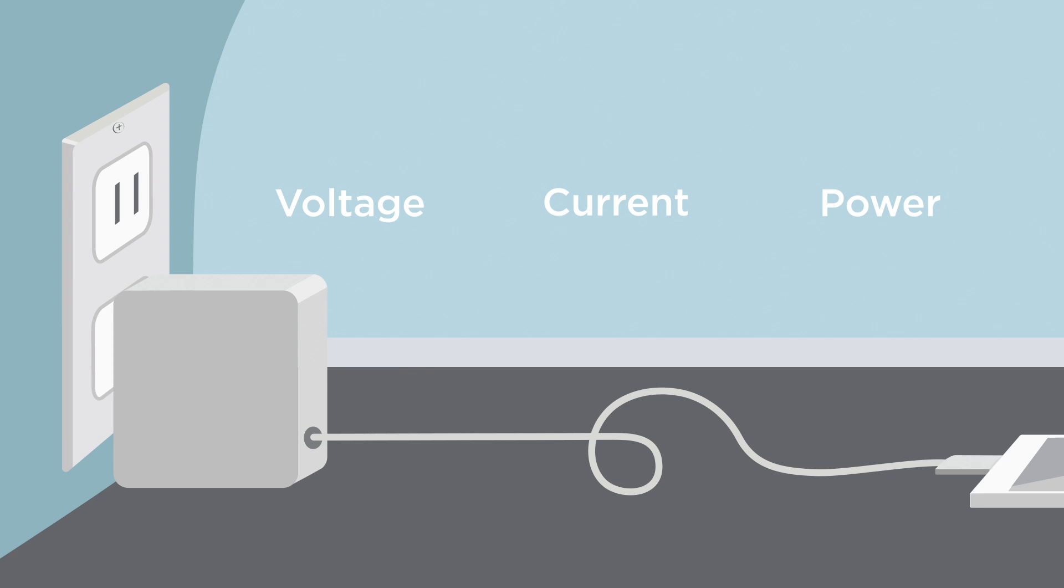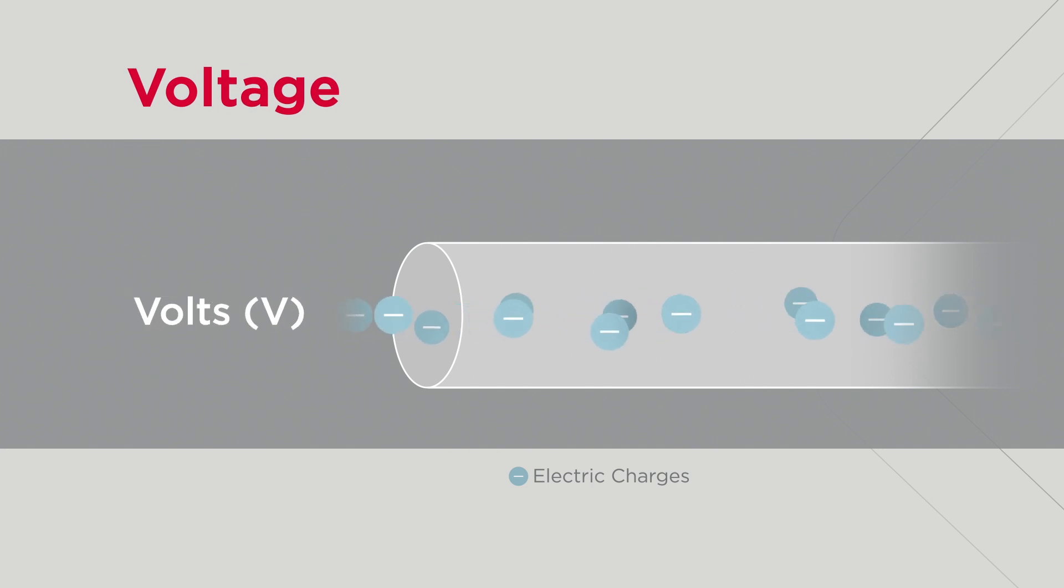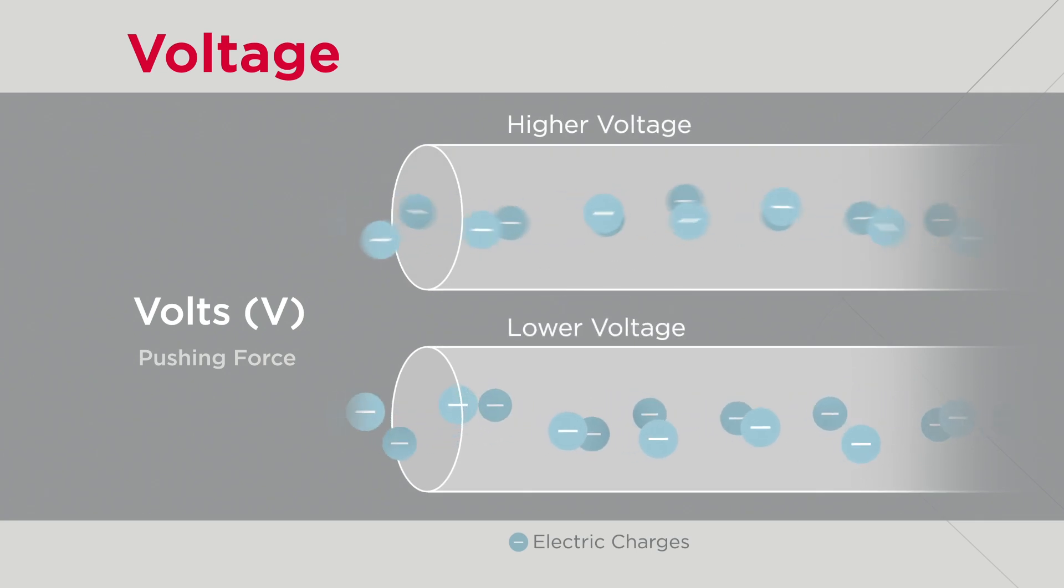In a simplified illustration, if we look inside a wire, we can find electric charges flowing through the circuit. And voltage, measured in volts, acts as the pushing force that drives electric charges through the circuit. Thus, high or low voltage indicates the strength of this force, which in turn affects the flow rate of charges.